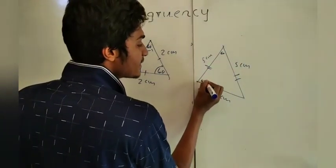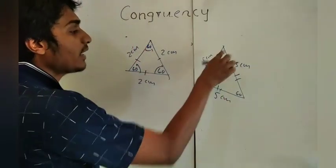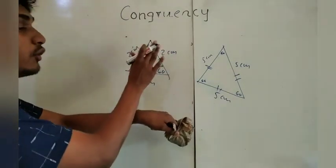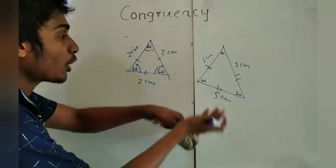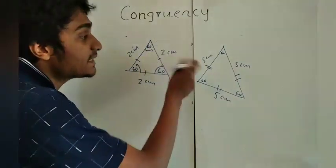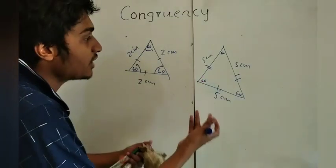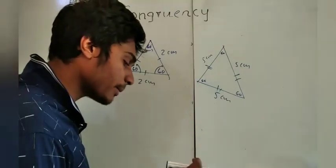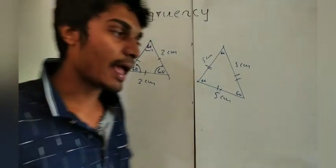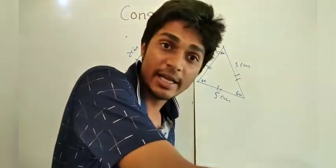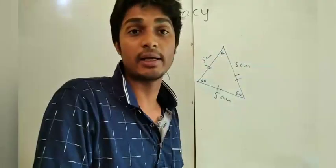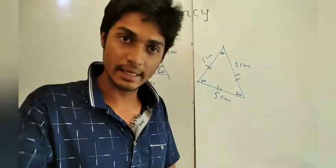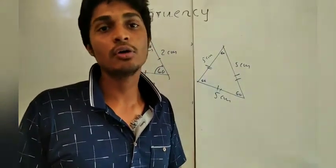Since the sides are different, these two equilateral triangles are not coinciding with each other, so they are not congruent. Therefore Angle-Angle-Angle is NOT a condition for congruency. When all angles are equal, we give it a special name: equiangular triangles — which we will discuss in later sections of Grade 11. Thank you, see you in the next video.